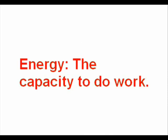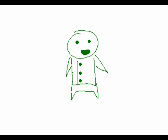Energy is defined as the capacity to do work. Internal energy of a system is the sum of all kinetic and potential energies of all its components. So in finding the change of internal energy, it's easy with the obvious equation of delta E is equal to E final minus E initial, where delta E is the change in internal energy of the system.